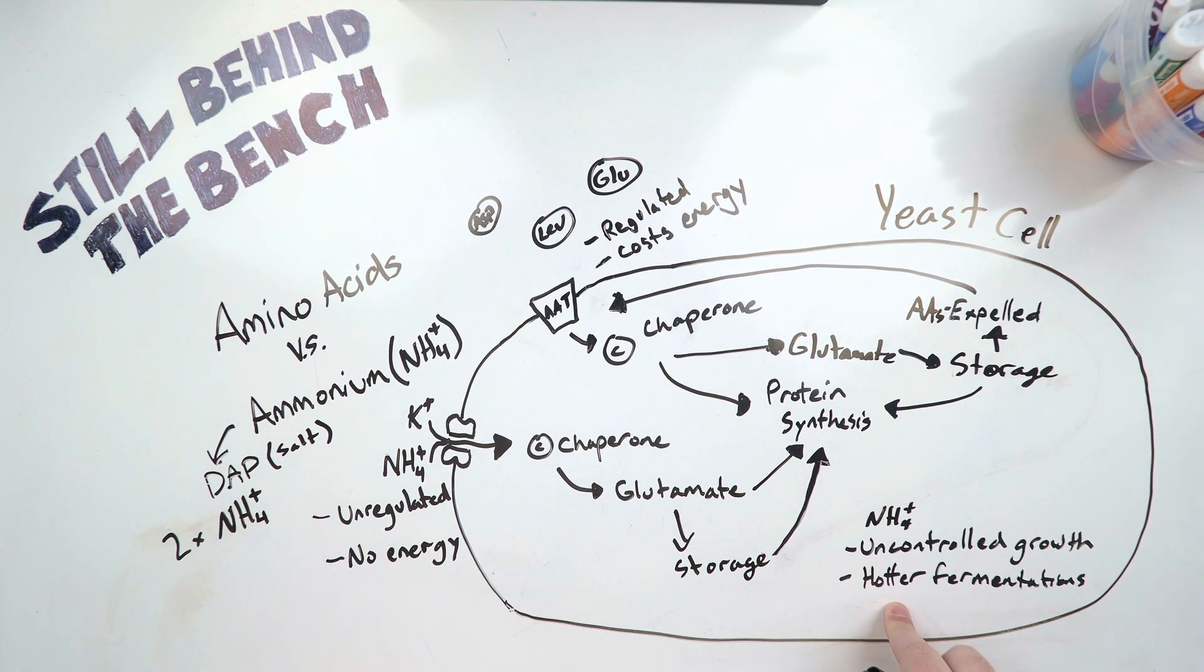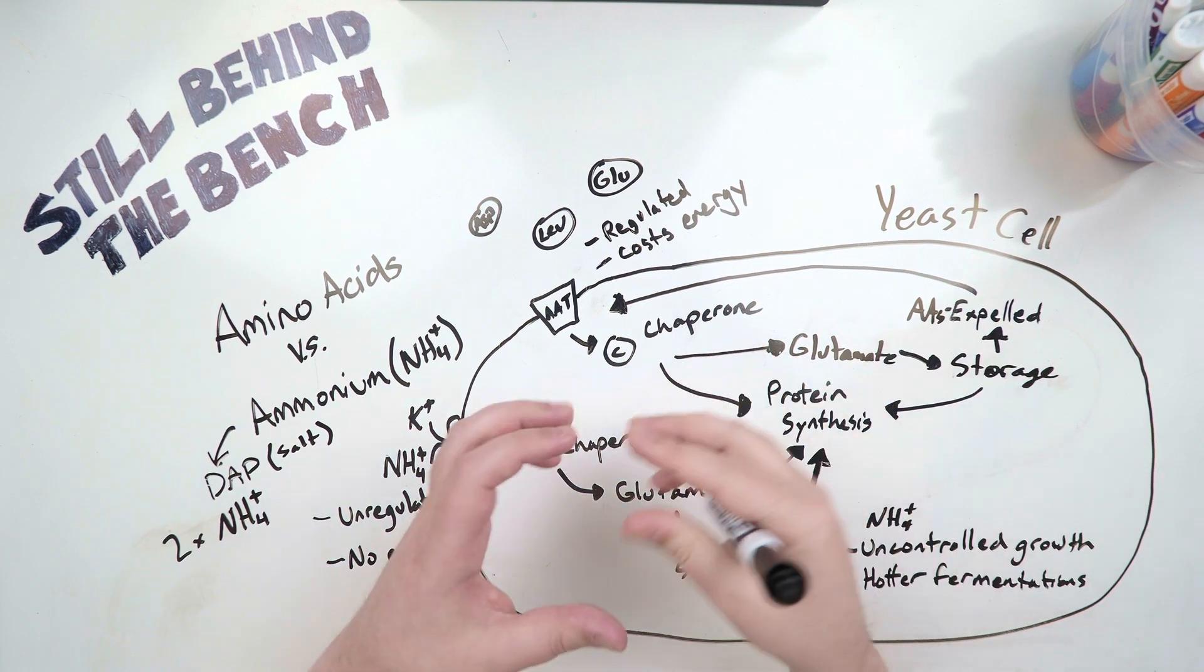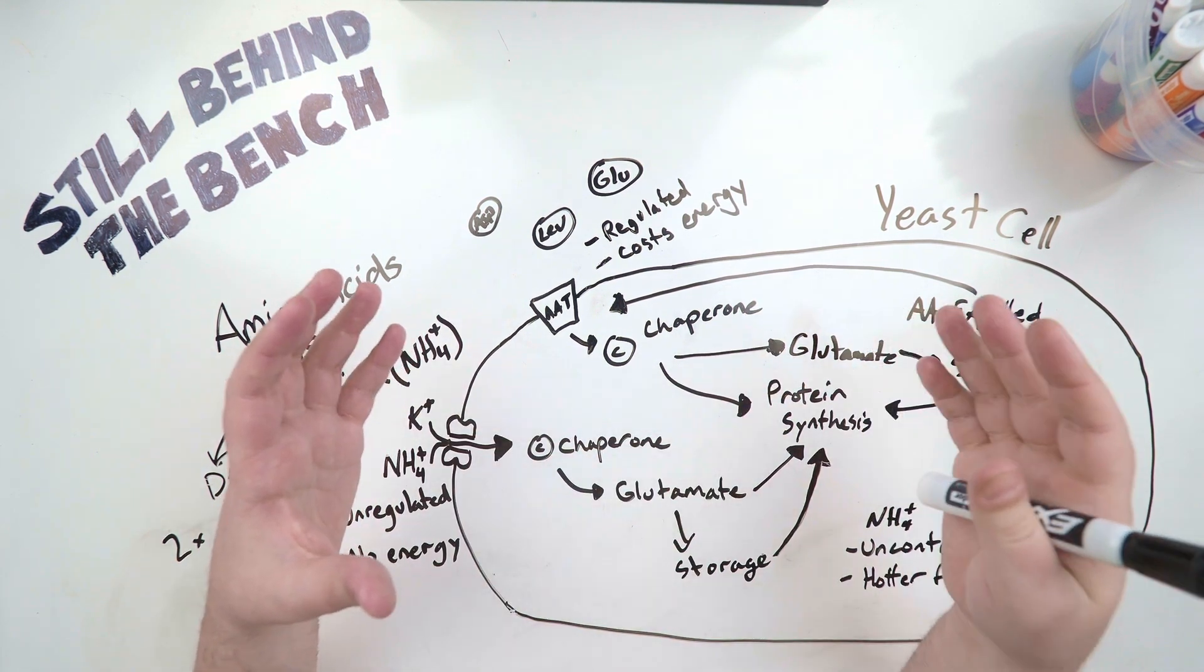In really large volumes of wash or mash, that might mean you need to control the temperature because the fermentation vessel may not be able to passively remove heat fast enough.